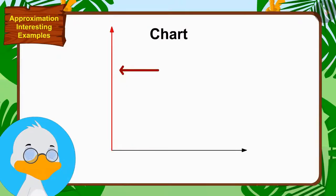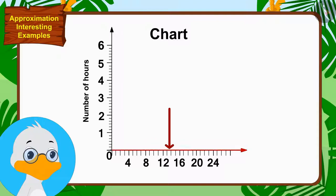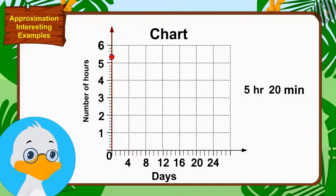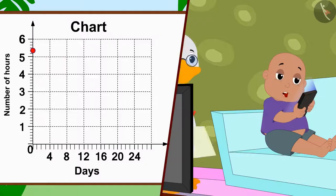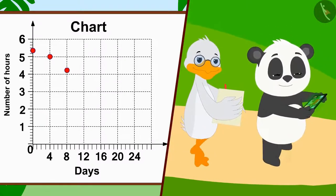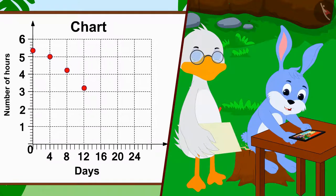Uncle has shown the number of hours on the vertical line of the chart, and the number of days on the horizontal line. Currently, children spend an average of 5 hours and 20 minutes on the phone every day. This is shown by the uncle making a point on the vertical line in this way. Uncle started recording the average time spent on the phone every 4th day on the chart.